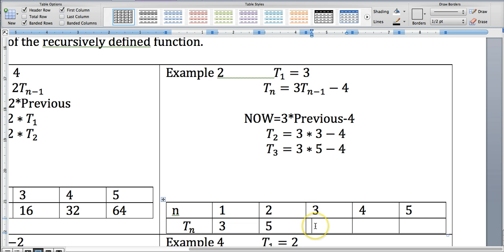And then the third term is going to be whatever this one turns out, three times five minus four which would give me eleven. What would be the next one? Maybe you want to pause this and figure out what the next one is.